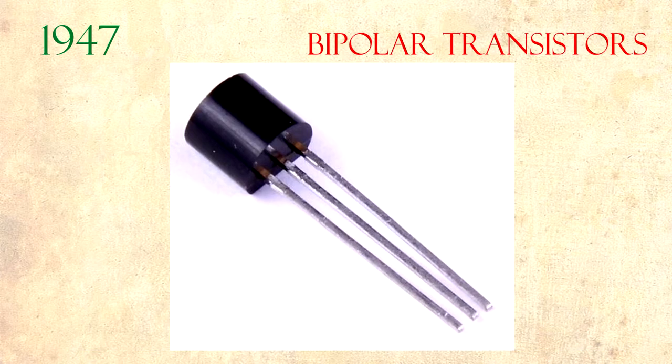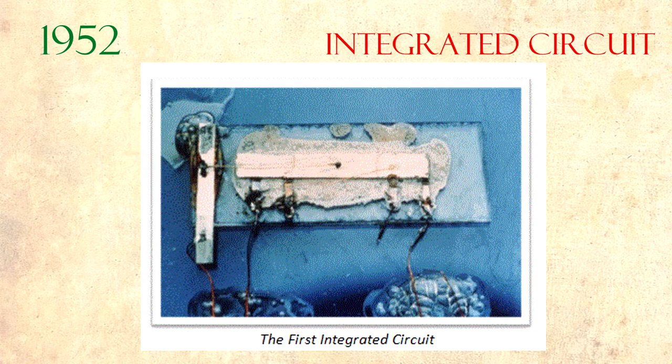In 1946, the bipolar transistor was invented, which made computers drastically smaller. The integrated circuit made the computer even smaller. The general idea of the integrated circuit was conceptualized in 1952 — it was a body where all the components of the electronic circuit were integrated. This invention led to the invention of microprocessors and opened the commercial and personal use of computers.